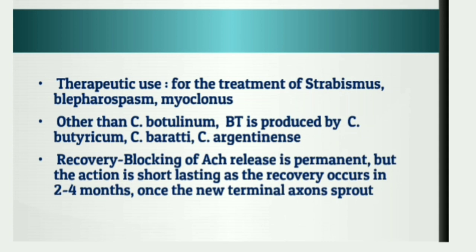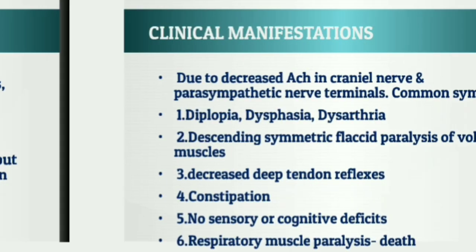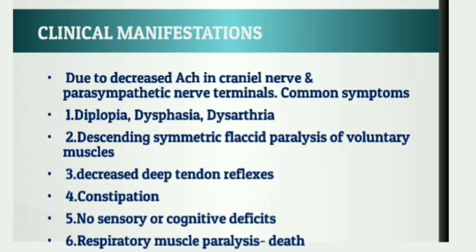Spores of this bacteria do not produce toxins because it requires spore germination, which occurs only in an anaerobic atmosphere. Spores do not normally germinate in the adult intestine, but may germinate in the intestine of infants. The manifestations of botulism are due to decreased acetylcholine at the cranial nerve and parasympathetic nerve terminals.